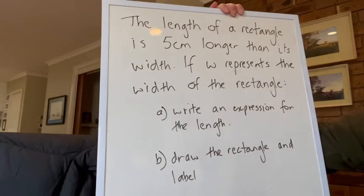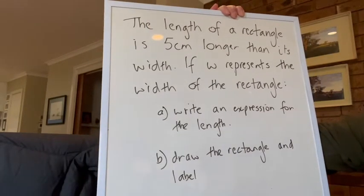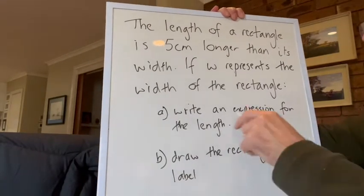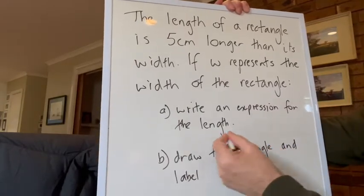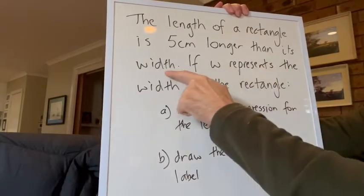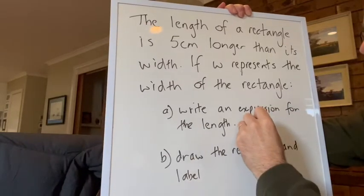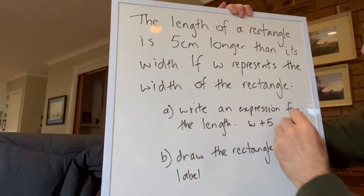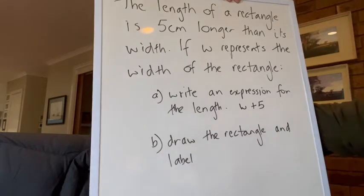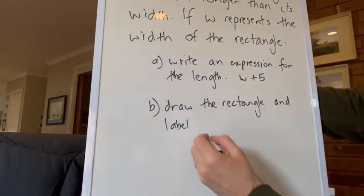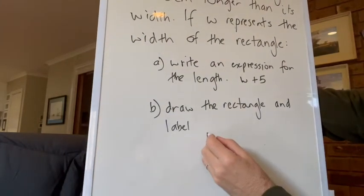If w represents the width of the rectangle, then write an expression for the length. So the length must equal the width plus five centimeters, so it'll be w plus five. Okay, then it asks you to draw and label a rectangle, so we'll draw a rectangle here.